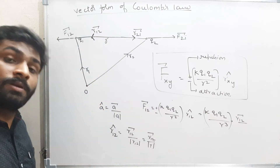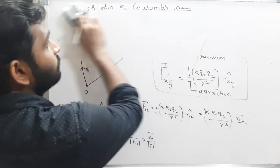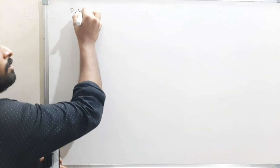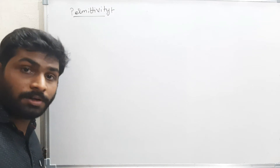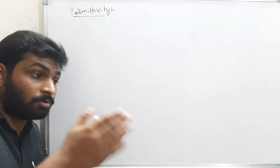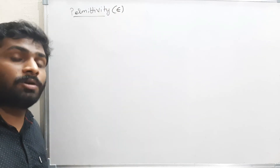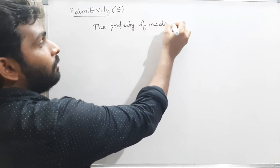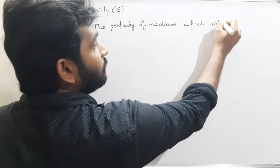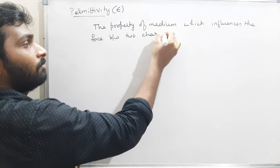By this we have completed the vector form of Coulomb's law. Now we will see what permittivity is. Permittivity is the property of the medium which influences the force between two charges, and it is given by the symbol epsilon (ε).